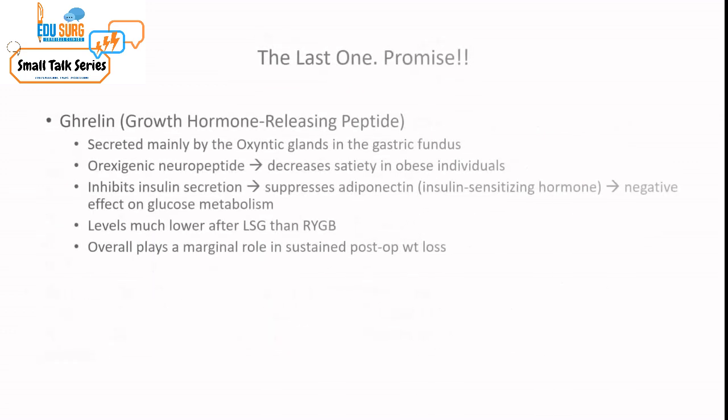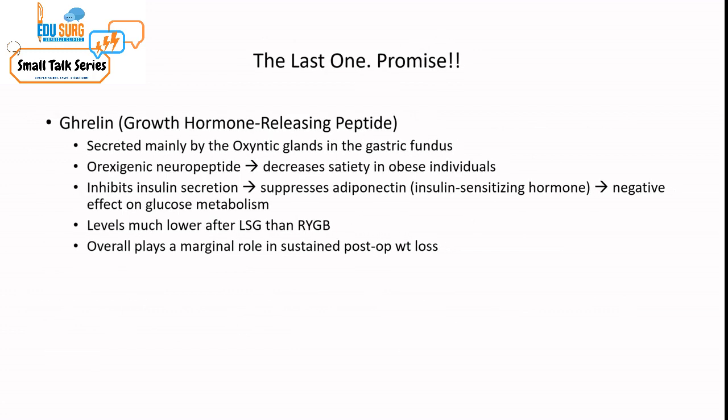Ghrelin, or the growth hormone-releasing peptide, is secreted mainly by the oxyntic glands in the gastric fundus. It is an orexogenic neuropeptide — the opposite of anorexogenic — which causes decreased satiety in obese individuals, making them eat more. It inhibits glucose secretion and suppresses adiponectin, an insulin-sensitizing hormone secreted from fat cells, negatively affecting glucose metabolism. Ghrelin levels fall much lower after laparoscopic sleeve gastrectomy than after gastric bypass, which is how it probably plays a role in decreasing hunger and cravings and increasing satiety. Overall, it plays only a marginal role in sustained post-op weight loss beyond one to three years.